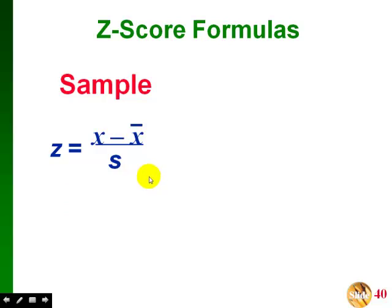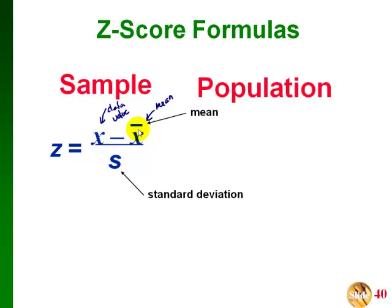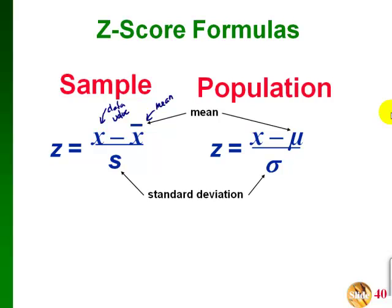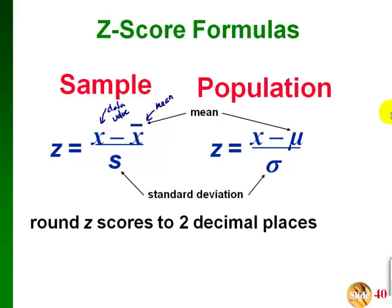To find the Z score, we have two different formulas depending on whether we have a sample or a population. For a sample, Z equals X minus x-bar divided by S, where X is our specific data value, x-bar is the mean, and S is the standard deviation. For a population, the notation is different: Z equals X minus mu divided by sigma, where mu is the mean and sigma is the standard deviation. We usually round Z scores to two decimal places.